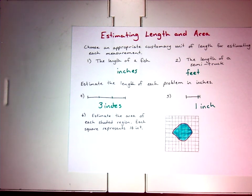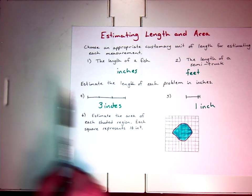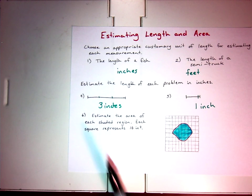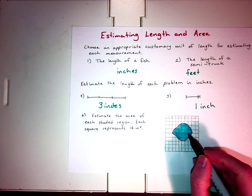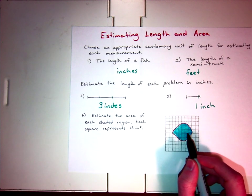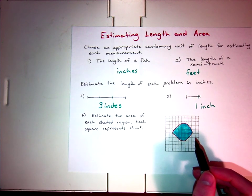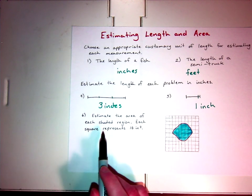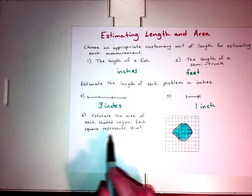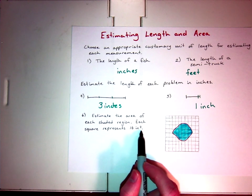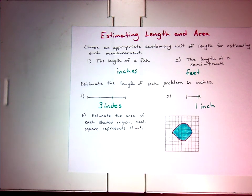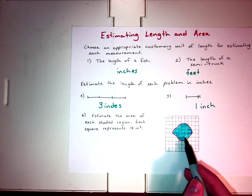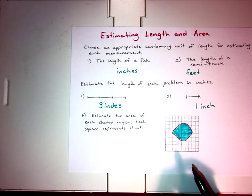Number six, we're estimating the area of each shaded region. A length is talking about just from point A to point B. Area, we're talking about square units. We're talking about something that's not just from here to here, it's covering a portion of our paper. Estimating the area of each shaded region. Each square represents 16 inches squared. Notice how we label area, inches squared, because we're talking about square inches, or whatever type of measurement it is referring to.